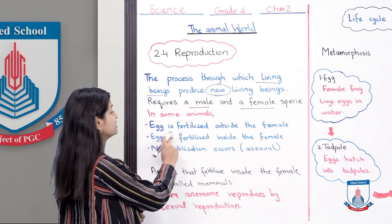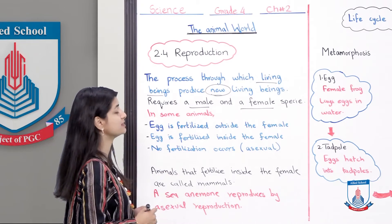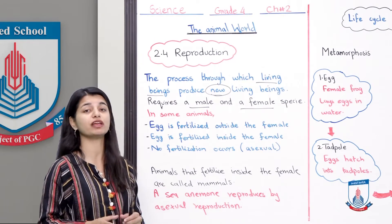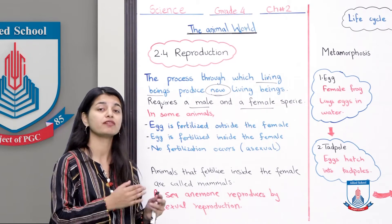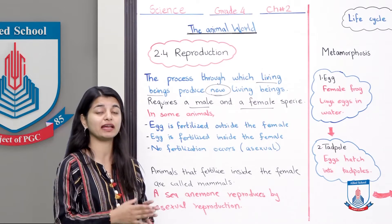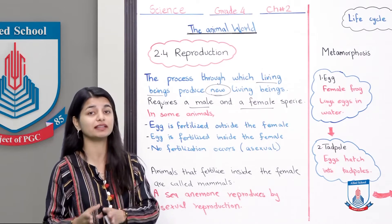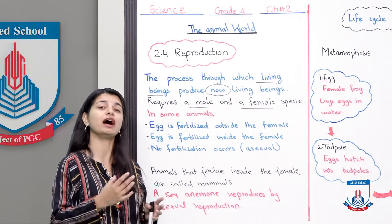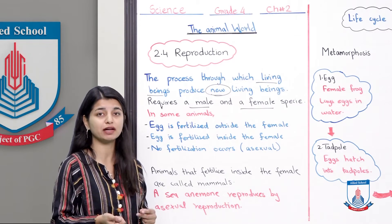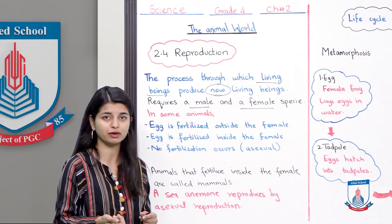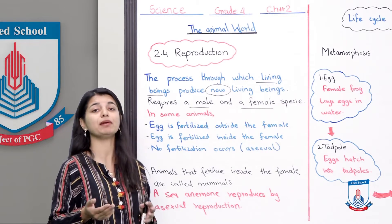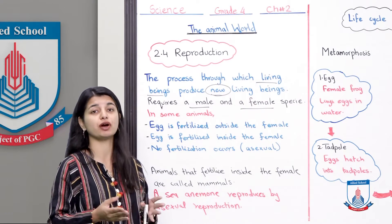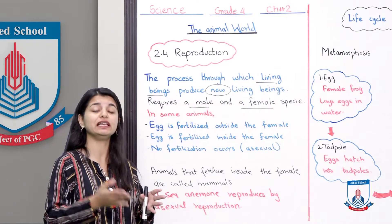In some animals, the egg is fertilized outside the female. The male fertilizes the egg outside the female body, and then the new offspring develops from there. Examples of this include frogs, fish, and reptiles such as lizards, where eggs are fertilized outside the body and new offspring are produced.